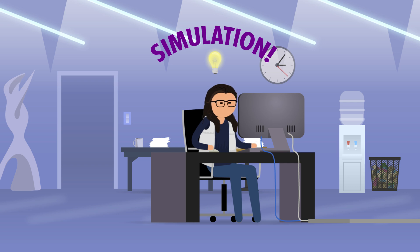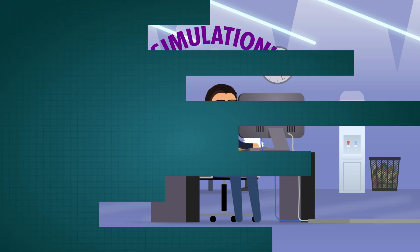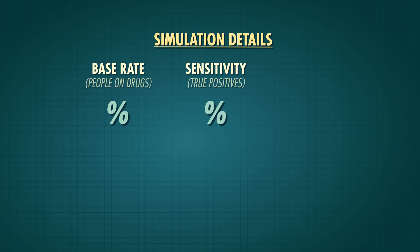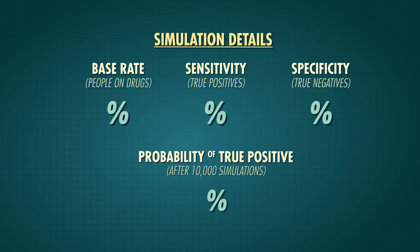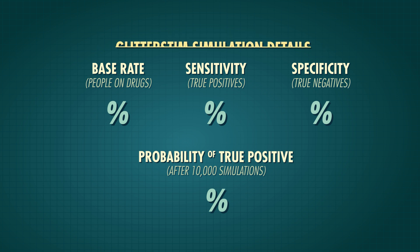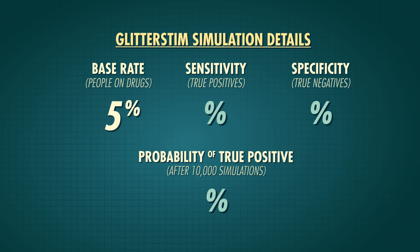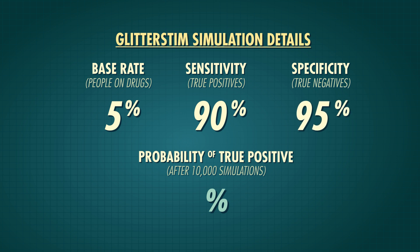Simulations are nice because we can just tell our computer some rules, and it will randomly generate data based on those rules. For example, we can tell it the base rate of people in our state that are on drugs, the sensitivity (how many true positives we get of the drug test), and the specificity (how many true negatives we get). Then we ask our computer to generate 10,000 simulated people and tell us what percent of the time the people with positive drug tests were actually on drugs. If the drug Joe tested positive for — in this case glitter stim — is only used by about 5% of the population, and the test has a 90% sensitivity and a 95% specificity, I can plug that in and ask the computer to simulate 10,000 people. When we ran the simulation, only 49.2% of the people who tested positive were actually using glitter stim. So I should probably give Joe another chance, or another test. And if I did the math, I'd see that 49.2% is pretty close — the theoretical answer is around 48.6%.